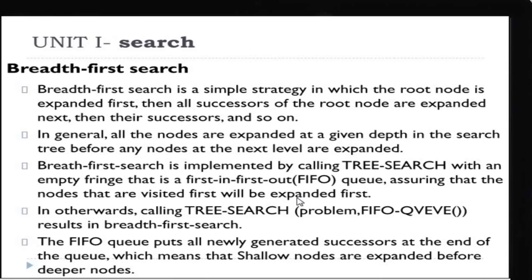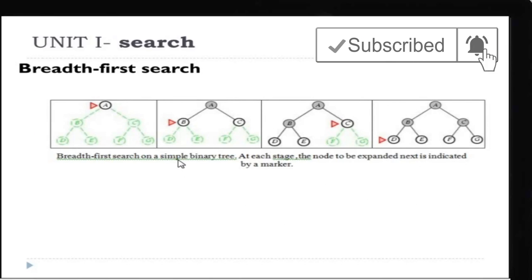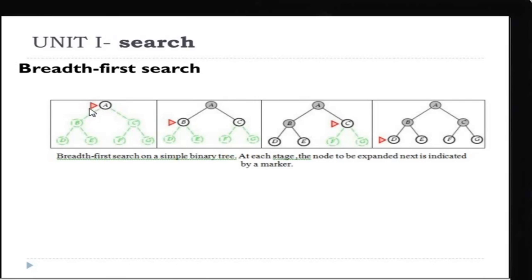The goal is to go from the initial state to the goal state by expanding all nodes. Looking at the diagram, in the first step, node A is expanded. Then at the next level, the successors of A — nodes B and C — are expanded. Then the successors of B and C, which are D, E, F, and G, are expanded at the next level. Like that, BFS expands level by level.